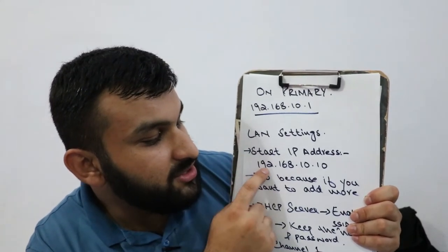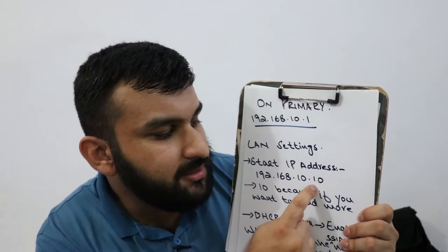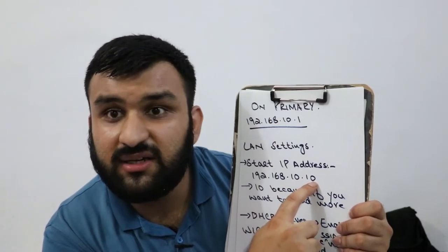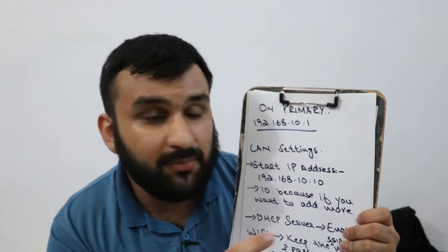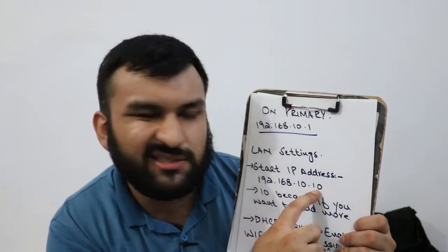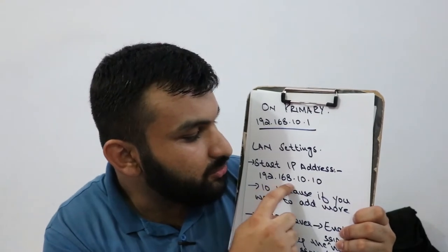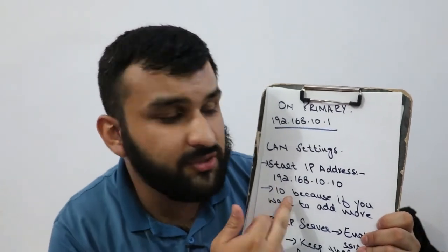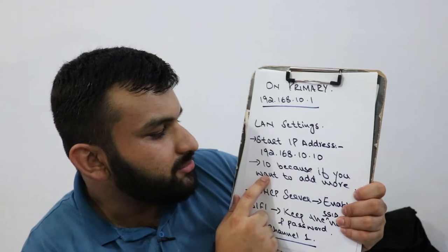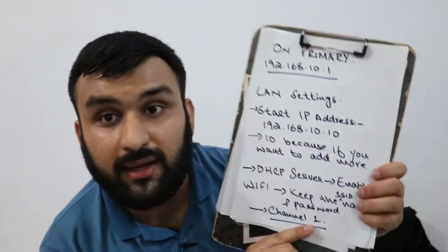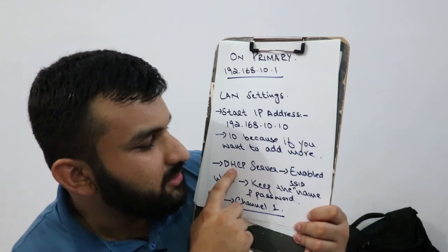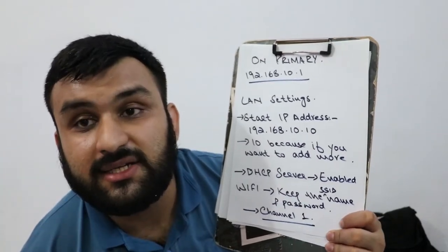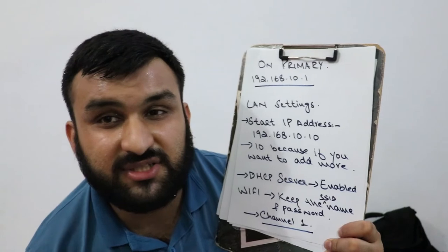In the LAN settings, change the start IP address to 192.168.10.10 — that way you leave room for additional routers without needing to reconfigure. Keep the DHCP server enabled on the primary router. Also keep your Wi-Fi SSID and password the same, and set the channel to channel 1.